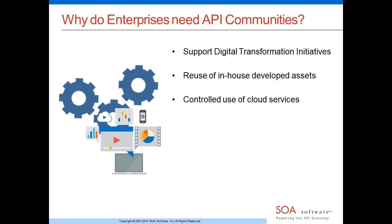If a developer builds an application inside the enterprise that relies on externally delivered functionality, you need to understand how that external functionality is being used, what data is stored externally, whether you're complying with regulations, and whether you're confident in your security. Using your internal API portal to provide a surface area for externally provided services is a really important aspect of this technology.